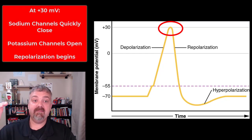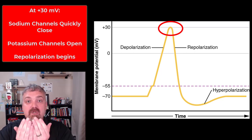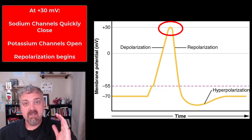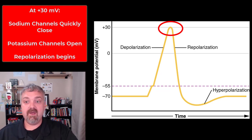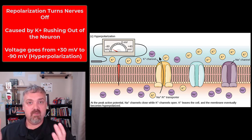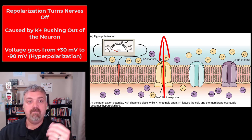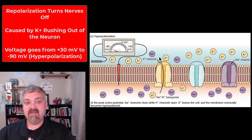But when we get to positive 30 millivolts, the sodium channels — very important — quickly slam closed. So the charge does not go higher than positive 30 millivolts. At the same time, potassium channels open, which leads to repolarization. The sodium channels have closed, no more sodium is coming in, and the potassium channels have flown open so potassium is leaving the cell. That drives us from positive 30 back down through positive 20, positive 10, zero, all the way down to negative 70 millivolts as we repolarize the neuron.